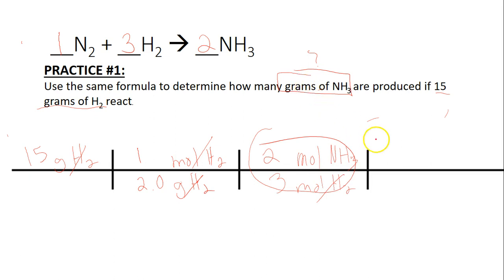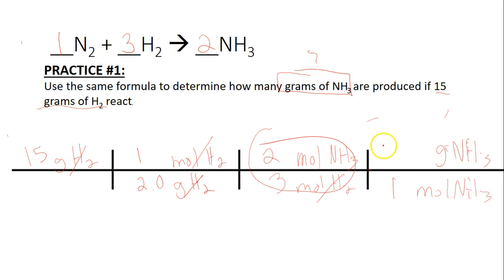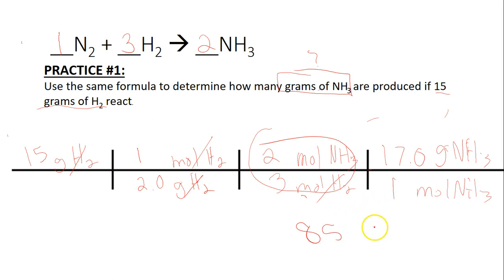We're almost done, but we're looking for grams. So I'm going to bring moles of NH3 to the bottom and go to grams of NH3. One mole of NH3 equals its molar mass: N is 14, H is 1 and we've got 3 of them, so that's 17.0 grams. The last thing is to multiply the top and divide by the bottom: 15 × 2 × 17 ÷ 2 ÷ 3 = 85 grams of NH3. We check significant figures — we started with 2, we finished with 2.